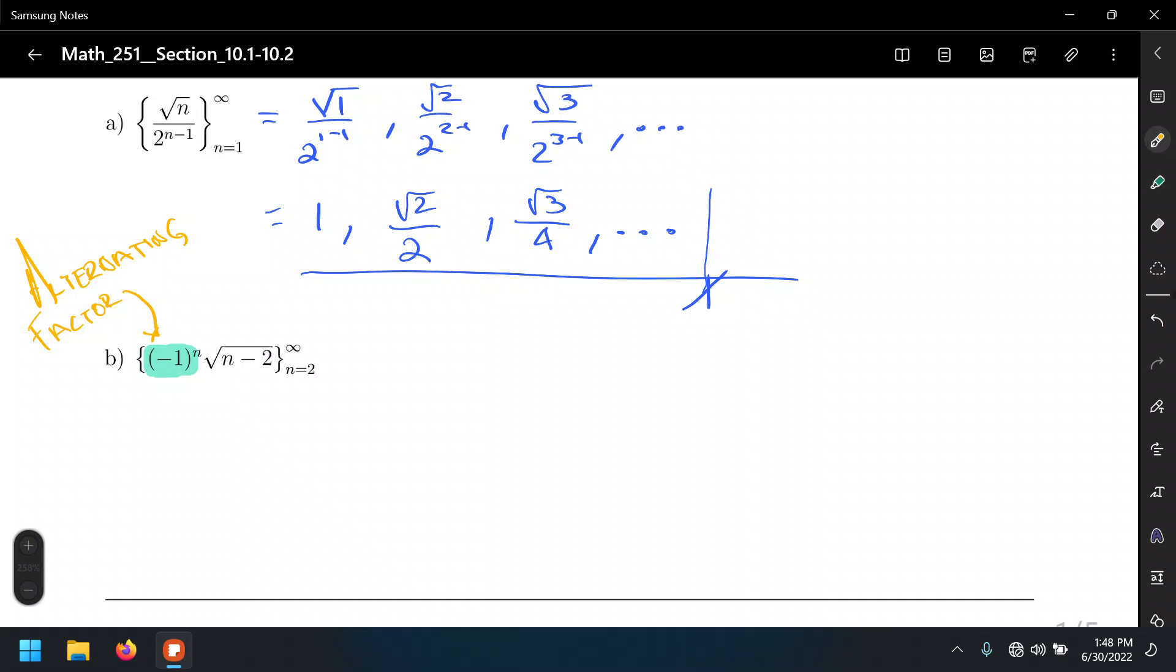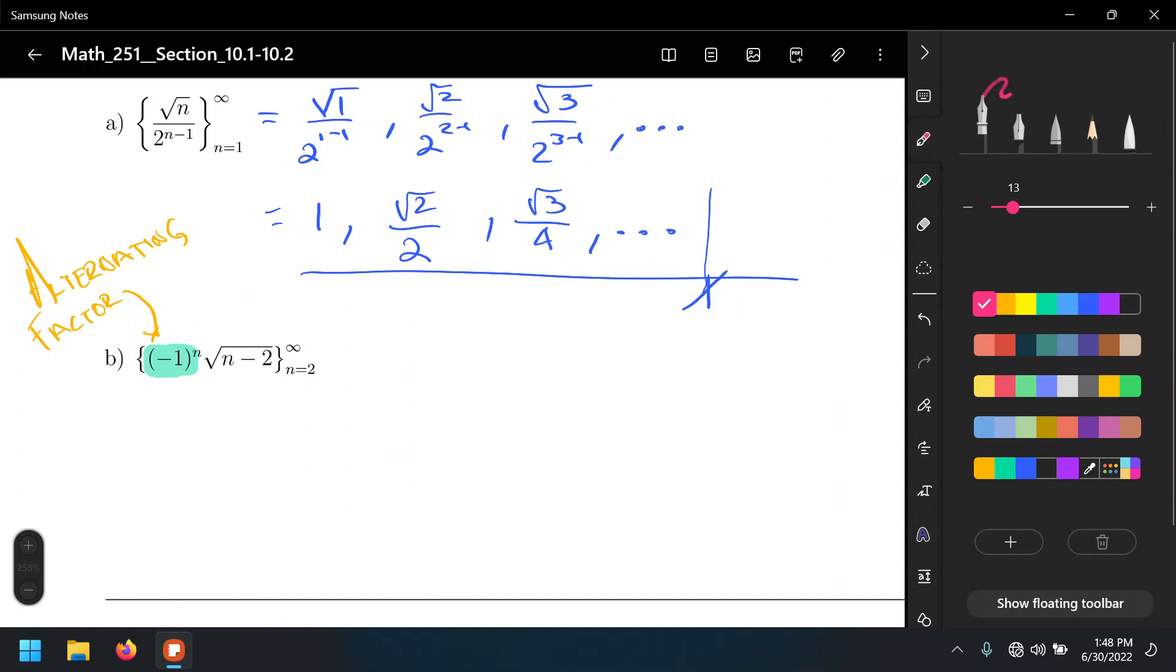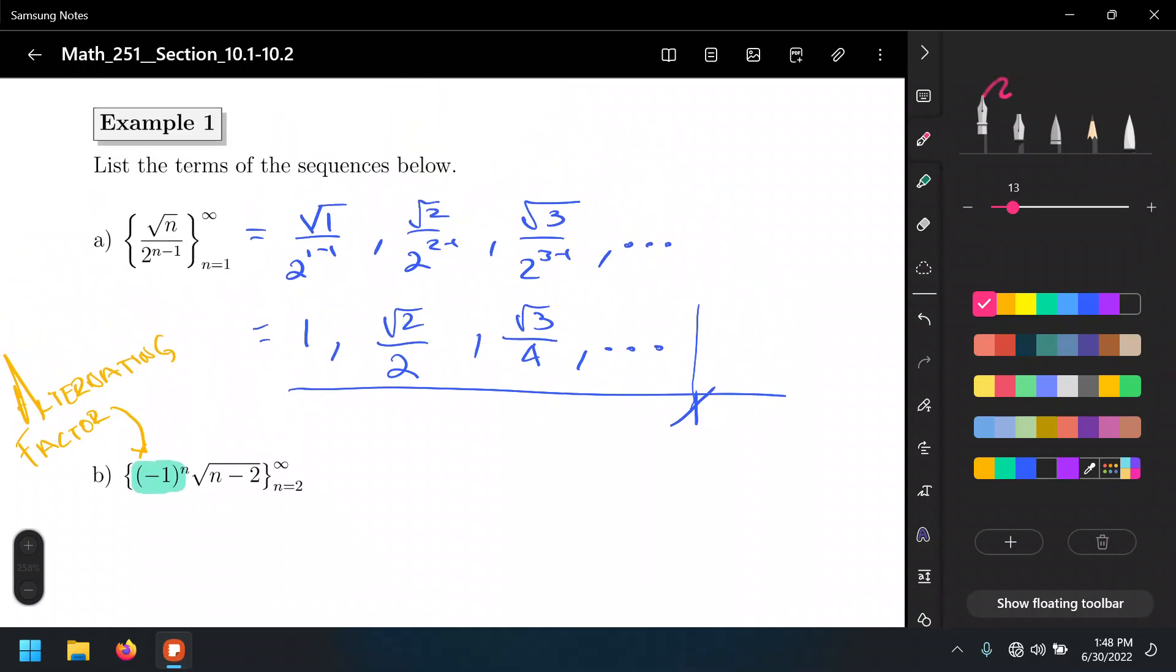Depending on the value of N, this negative 1 to an odd power remains negative, or that negative 1 to an even power becomes positive. That's what makes a sequence, and consequently later on a series, make them alternate between positive and negative. Let's just plug in a few values for this. Just in case you're curious, this is for N equals 1, N equals 2, and N equals 3.